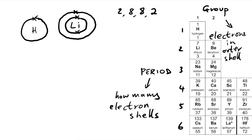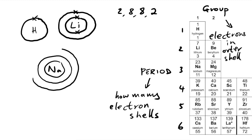Let's draw sodium just for good measure. We know it's in period three so it's going to have three electron shells. Usually we don't draw all of these because we're only usually concerned with how many electrons are in the outer shell, but today we're looking at how many shells there are. So it's not two in the second shell but eight if it's full, and then it's in group one again so we know we must have just one electron in the outer shell.